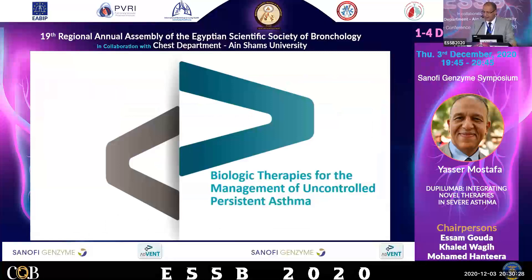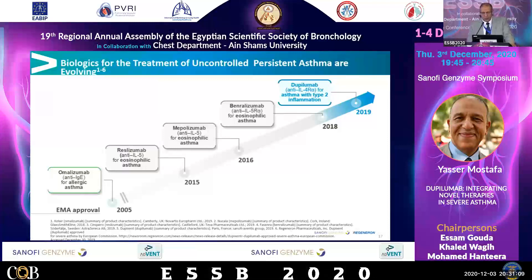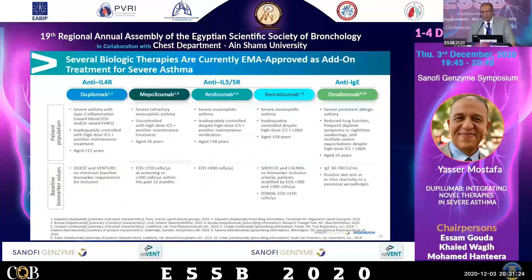In practice, as I visited one center of excellence in Spain, they sometimes use two drugs together — anti-IgE with anti-IL-5 or anti-IL-4. Biologic therapies for uncontrolled persistent asthma evolved since 2005 with omalizumab as anti-IgE. After that, anti-IL-5 agents were developed: reslizumab, mepolizumab, and benralizumab. And very recently in 2019, dupilumab, which is anti-IL-4 receptor. These are currently approved as add-on treatment for severe asthma, depending on the patient.